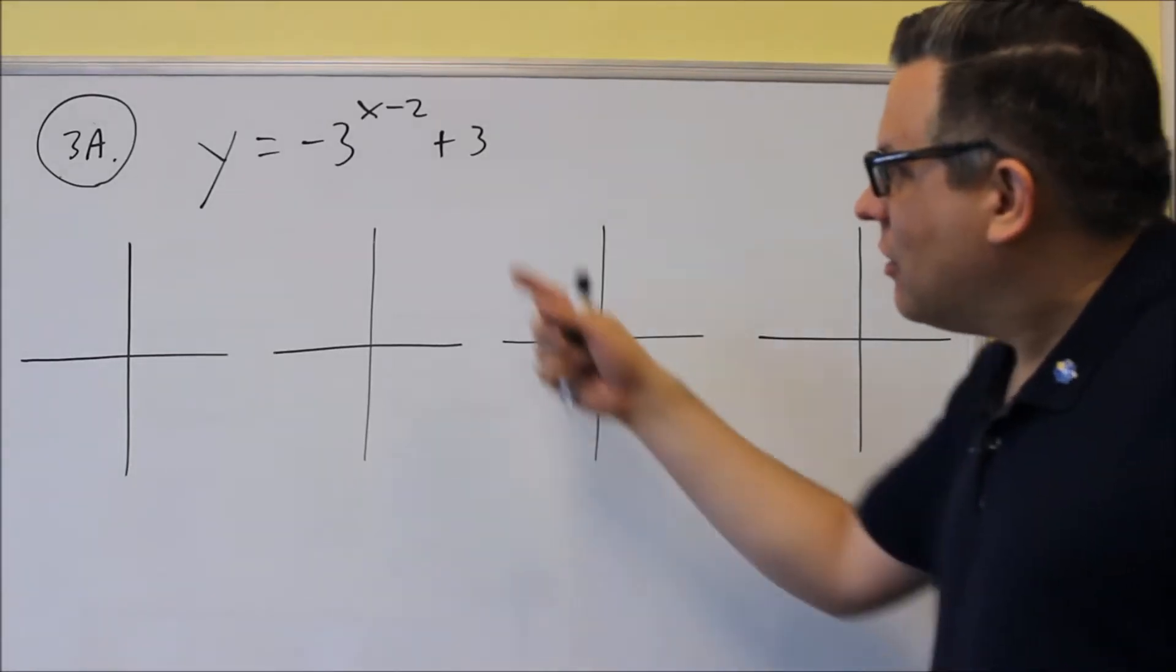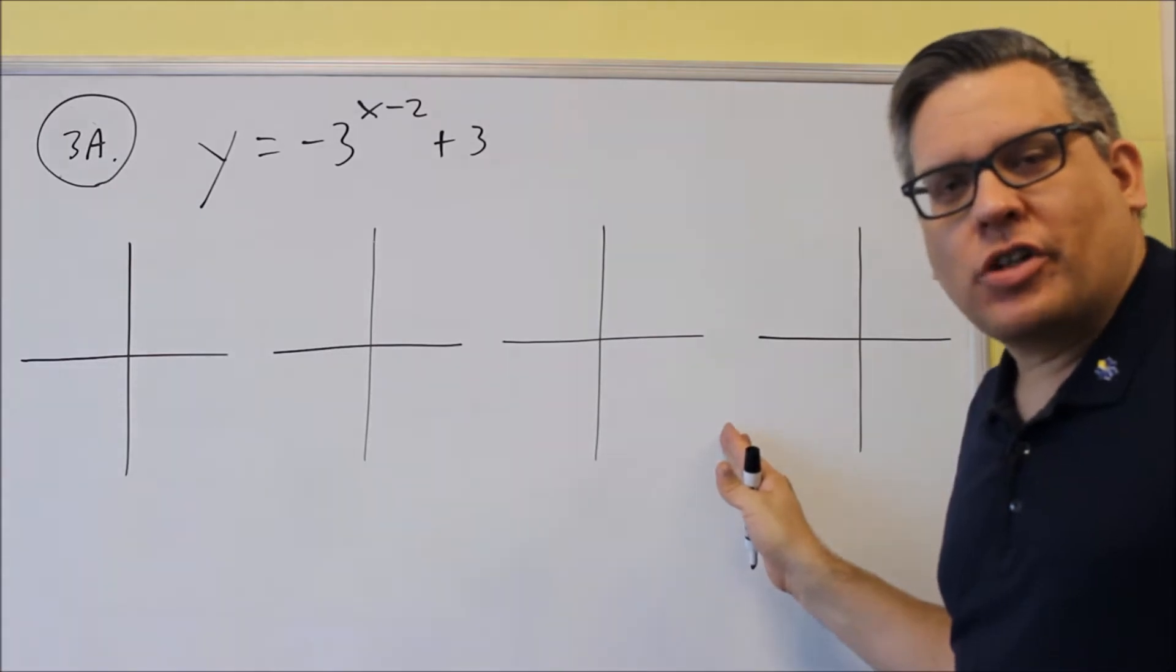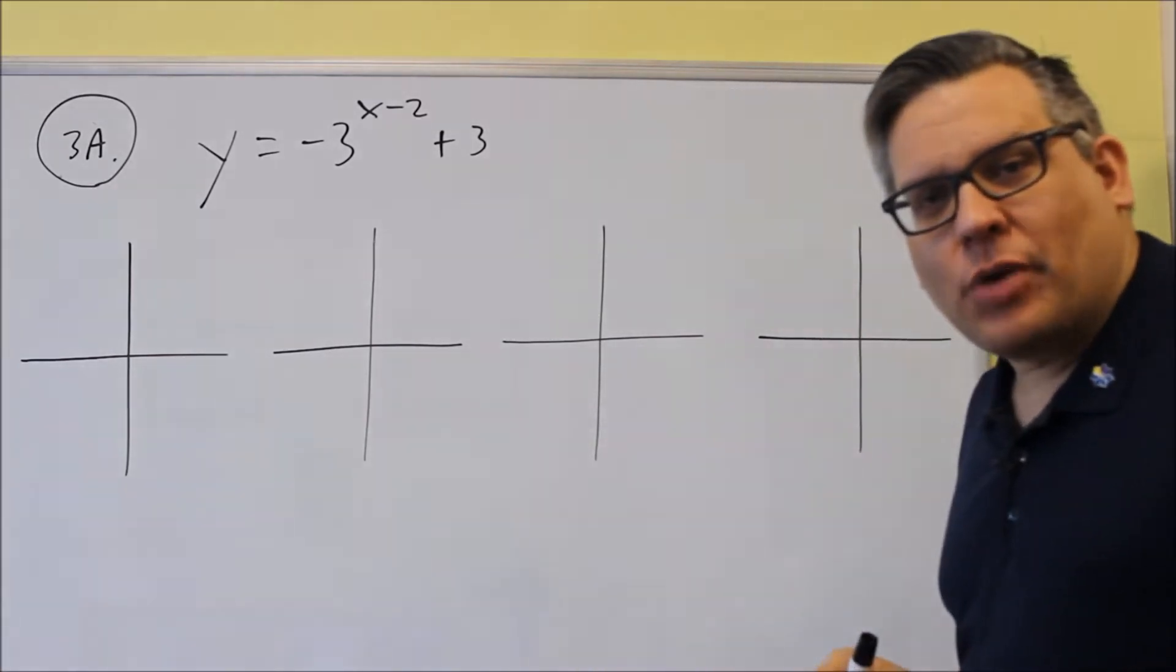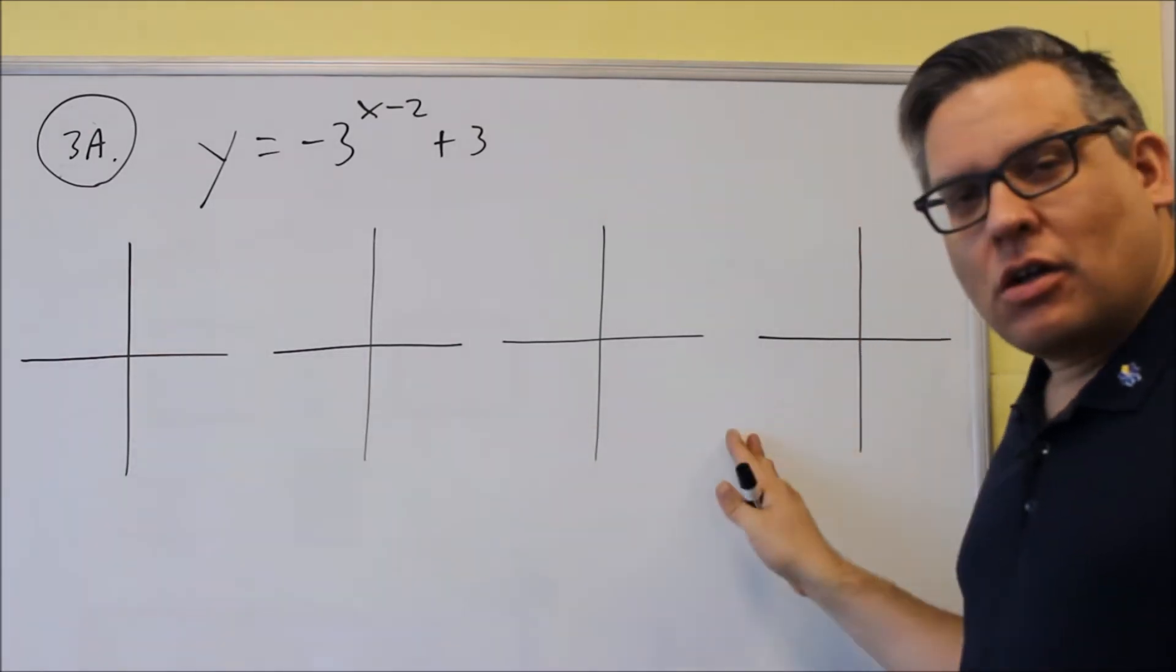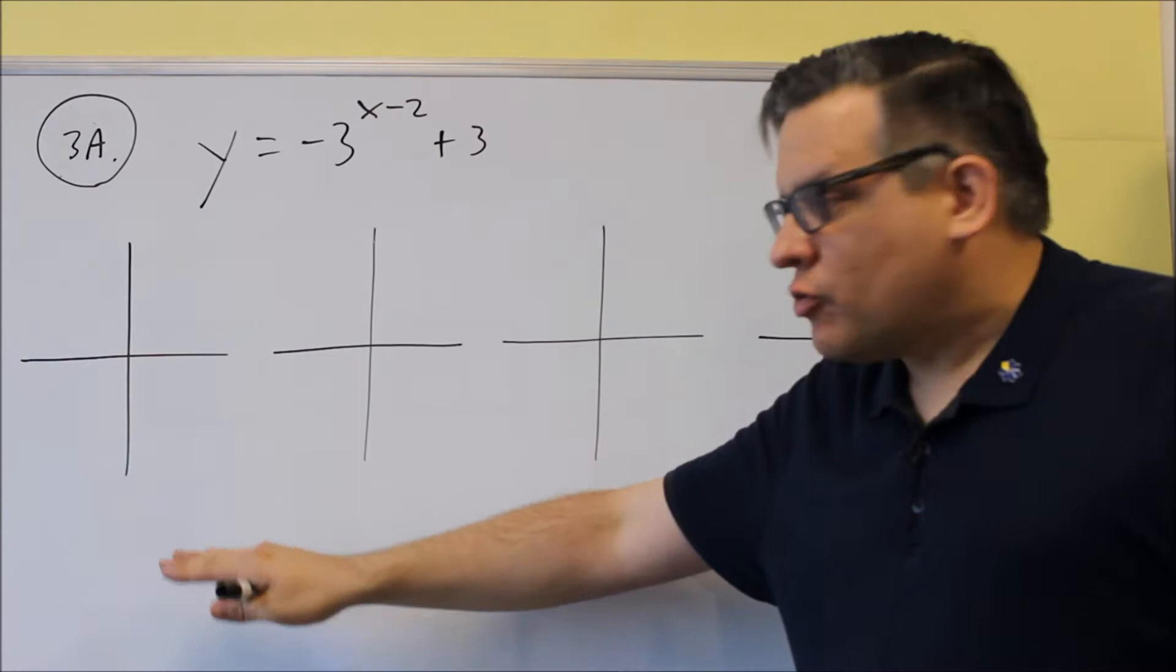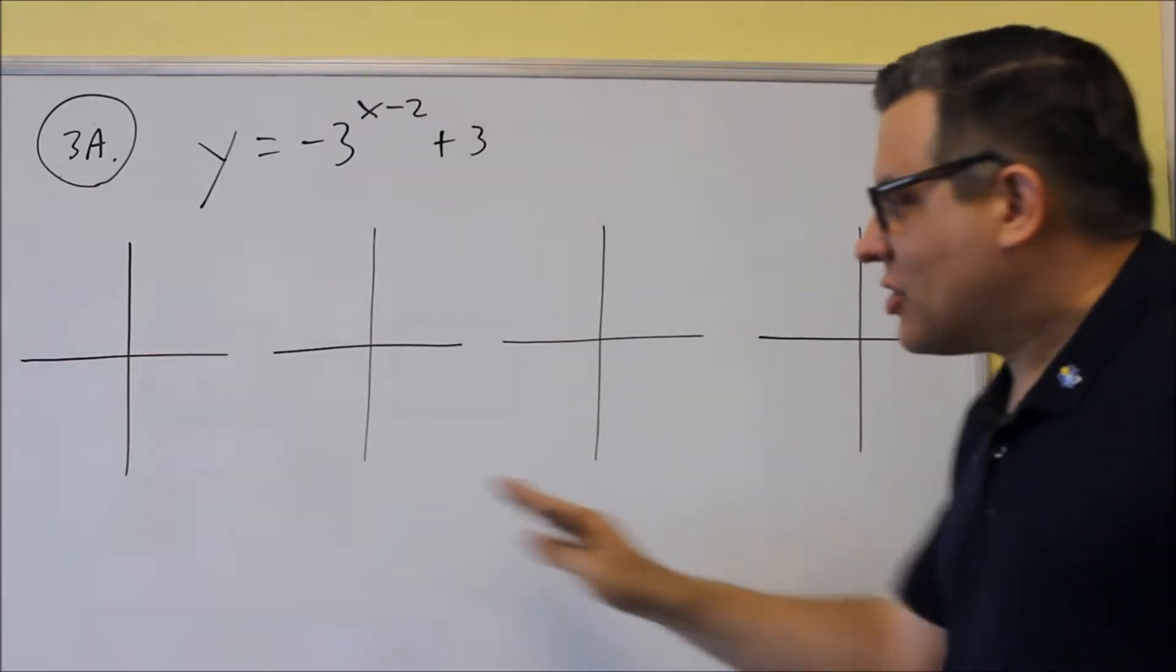Alright, for 3a, these should look familiar. We did these before on the first test when we talked about transformations. They're kind of coming back again here. So reminder, what you have to do here is we start with the base graph and then we draw each step to get towards our last graph.